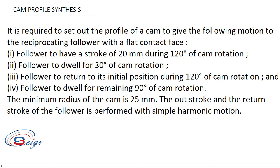The follower is to have a stroke of 20mm during 120 degrees of cam rotation, dwell for 30 degrees of cam rotation, return to its initial position during 120 degrees of cam rotation, and dwell for the remaining 90 degrees. The minimum radius of the cam is 25mm, and both the out-stroke and return stroke are performed with simple harmonic motion.